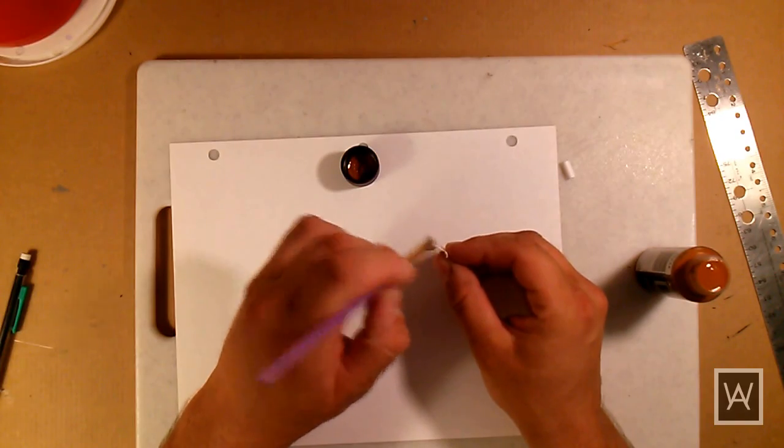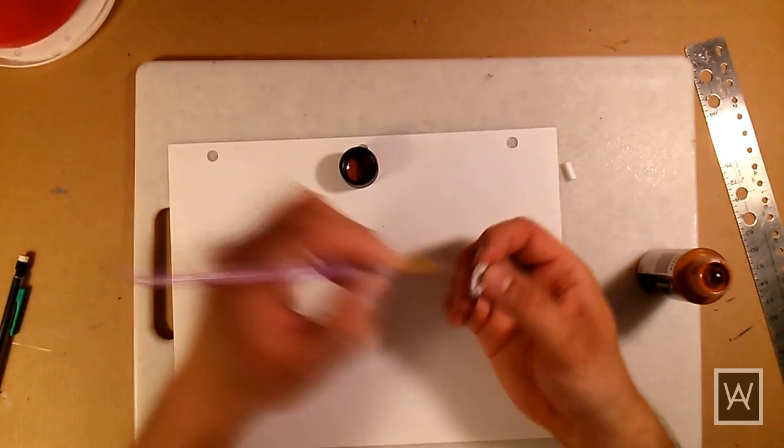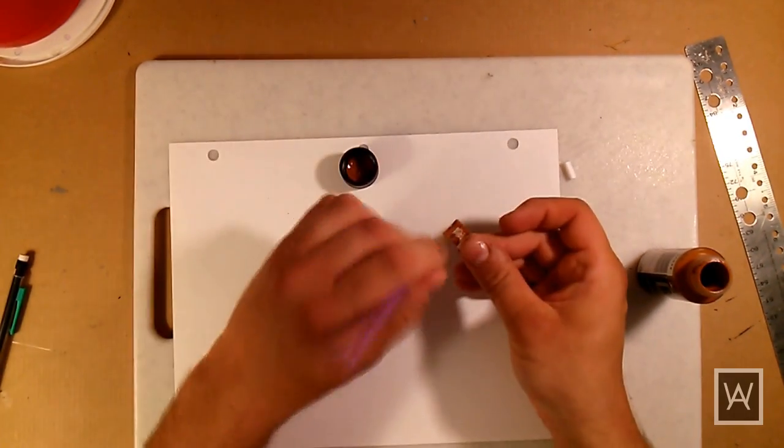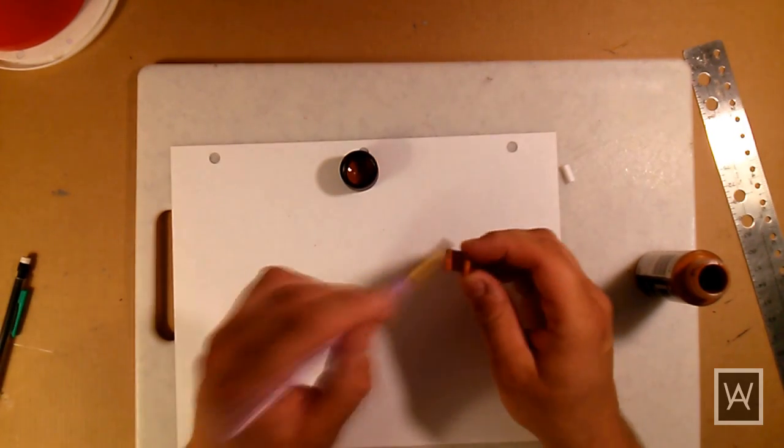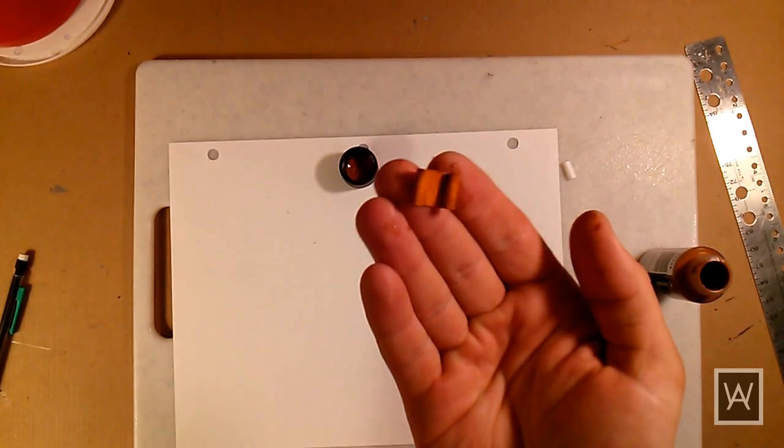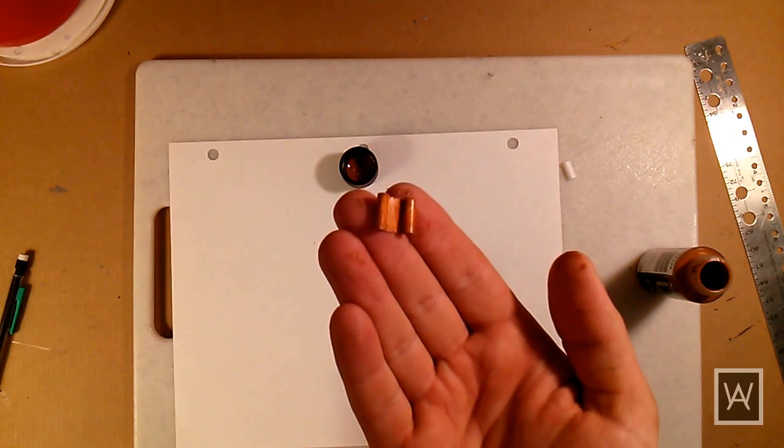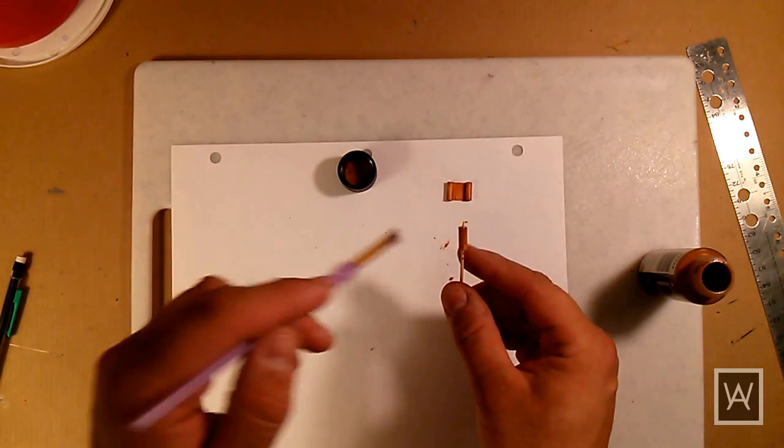As for painting, begin with a light brown color. I'm using cocoa bean. Do not water it down but apply a light base coat to the scroll. You'll notice that with only one thin coat the paint looks very streaky and uneven. This is not only okay but it is desired.